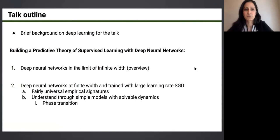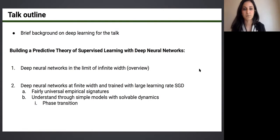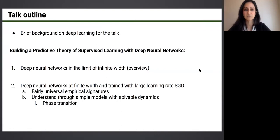The outline for the talk: I want to first give a little background on deep learning sufficient for understanding this talk, and then focus on two parts broadly covering research I've done over the past two to three years with collaborators at Google, trying to understand deep neural networks very systematically. The first part will be an overview of investigations into deep neural networks that are very wide or infinitely wide.